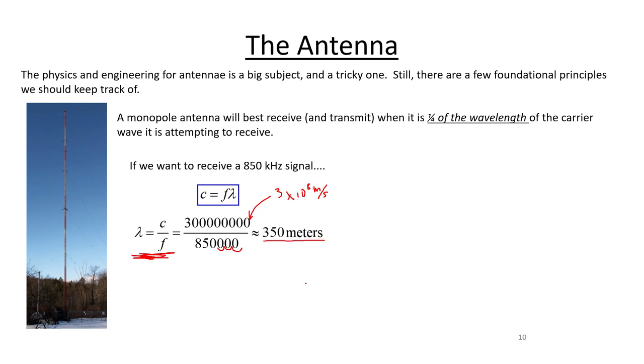And even when you divide that by four, you're still getting something that's approximately 90 meters. A little bit less than that, but still 90 meters is how long your antenna would have to be on a receiver to best receive the 850 kilohertz carrier wave.